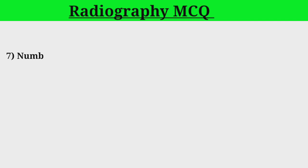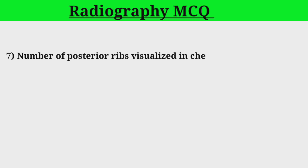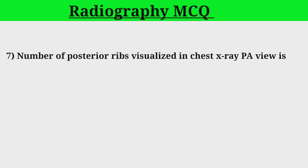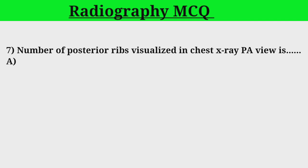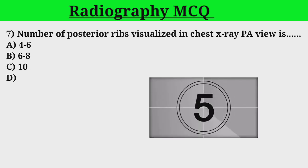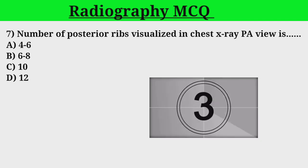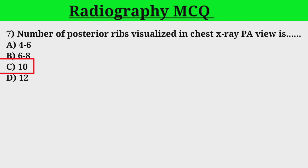Question 7. Number of posterior ribs visualized in chest X-ray PA view is: A. 4-6. B. 6-8. C. 10. D. 12. Correct answer: C.